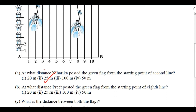Next question: at what distance did Pre post the green flag from the starting point of the eighth line? She runs one fifth of the distance, so you do one fifth of 100, which equals 20 meters. Her coordinate is (8, 20).